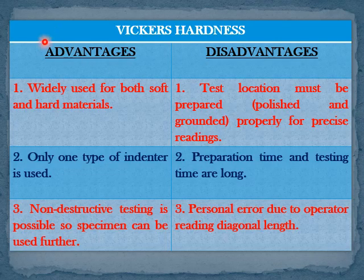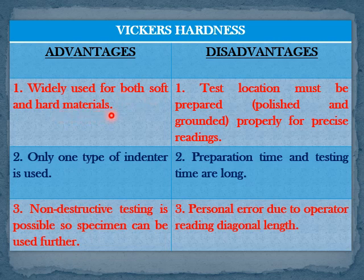Advantages of Vickers hardness testing: the method is widely used for both soft and hard materials as the load ranges from 10 grams to 1000 grams. Only one type of indenter is used. The method is non-destructive in nature, so the specimen can be used for further purposes.